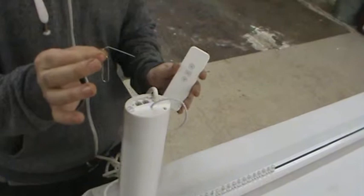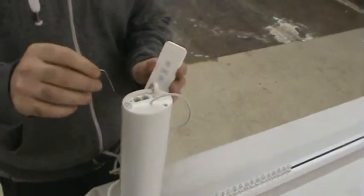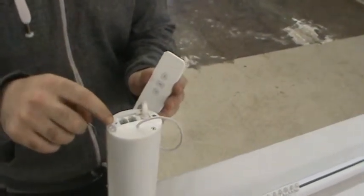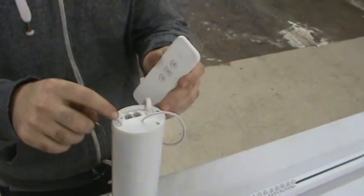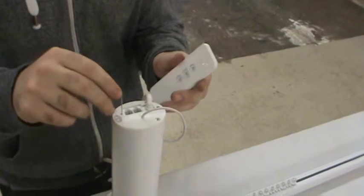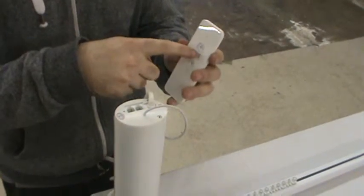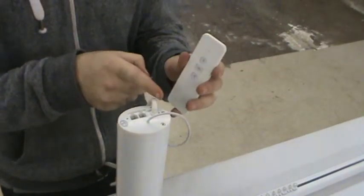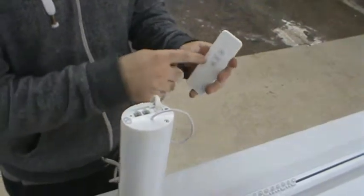You're going to need your paper clip again. You're going to hold in the program button again until this LED light starts flashing red slowly. So you're going to do that. And then you just hold in this middle button until it blinks blue and it reversed the polarity.